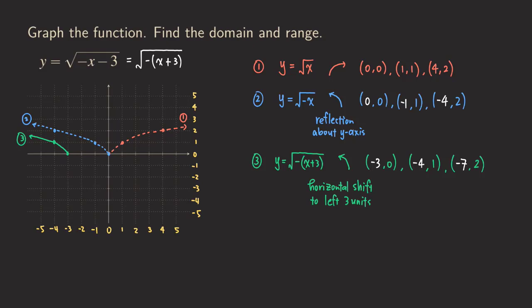Now there is one more thing we need to do: find the domain and range. Because we already have the graph, finding the domain and range will be easier by just looking at it. The graph keeps going to the far left, so the domain covers all x values less than or equal to negative 3. So the domain is from negative infinity up to negative 3, and negative 3 is included, so we use a bracket.